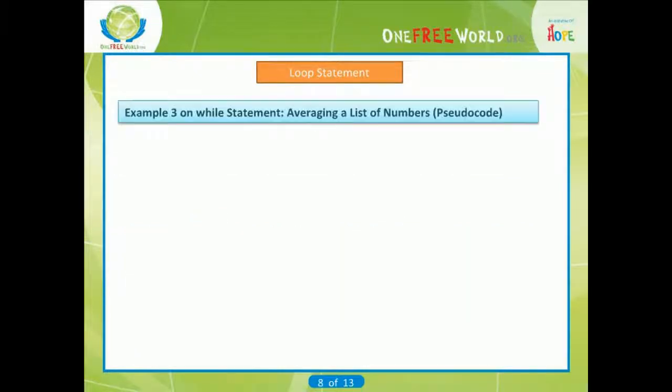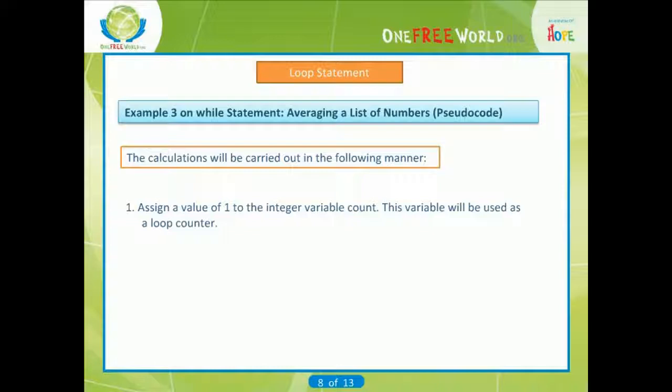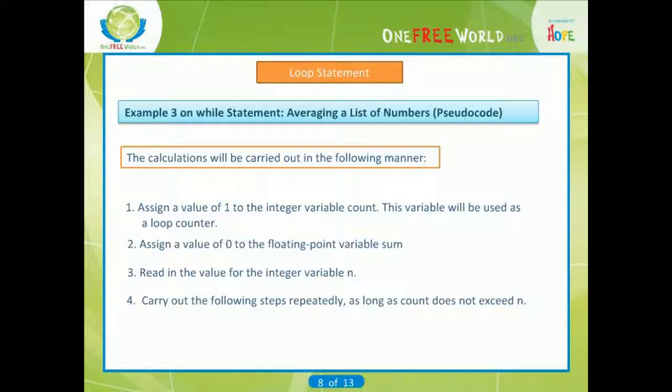The calculations will be carried out in the following manner. Assign a value of 1 to the integer variable count. This variable will be used as a loop counter. Assign a value of 0 to the floating-point variable sum. Read in the value for the integer variable n. Carry out the following steps repeatedly as long as count does not exceed n.